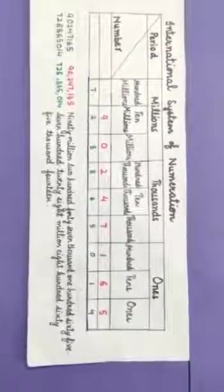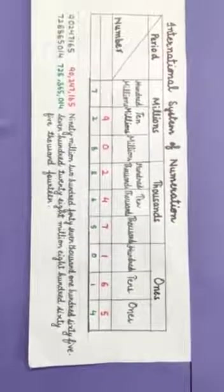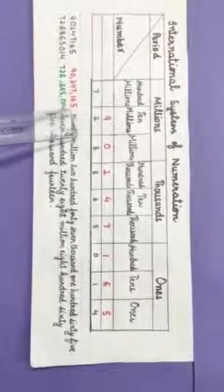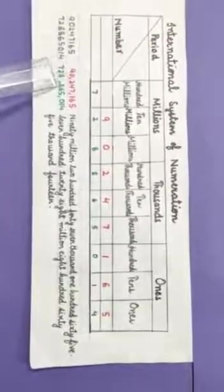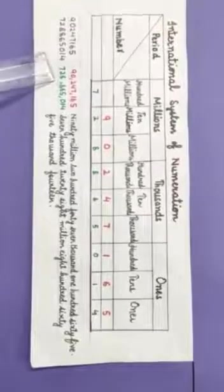In the International System of numbers, we separate the periods using commas by placing them after every 3 digits, as you can see here and here also.